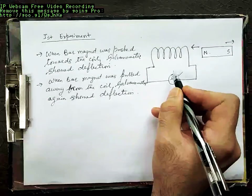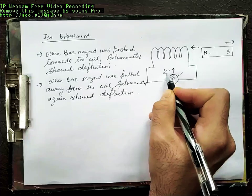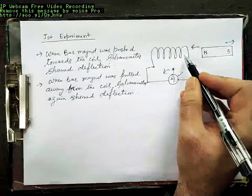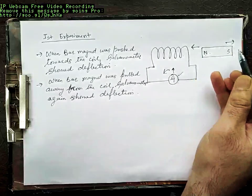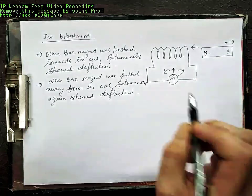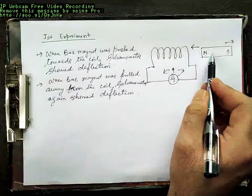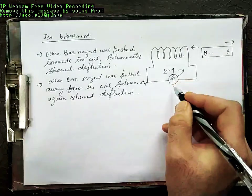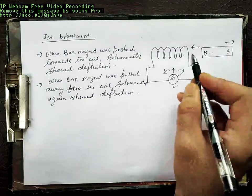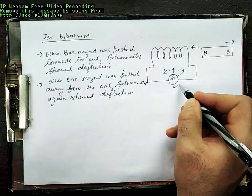When the bar magnet was pushed towards the coil, the deflection shown by the galvanometer was in one direction. And when this bar magnet was pulled away from the coil, the deflection was in the opposite direction. When the bar magnet was pushed towards the coil, galvanometer showed deflection in one direction. When the bar magnet was pulled in the opposite direction, the galvanometer showed deflection in the opposite direction.